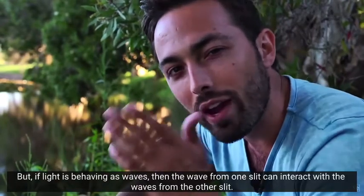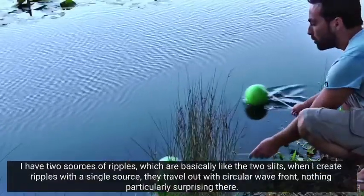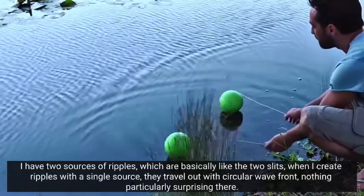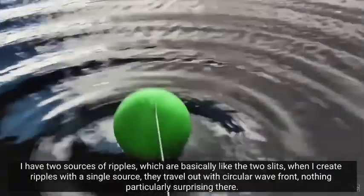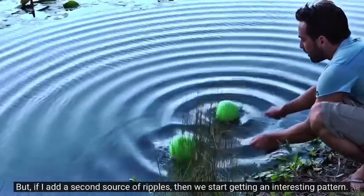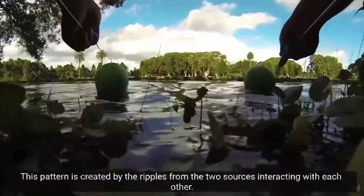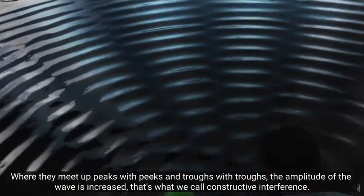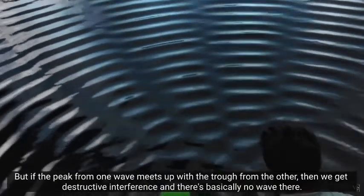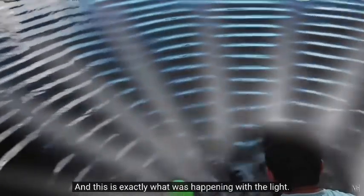But if light's behaving as waves, then the wave from one slit can interact with the waves from the other slit. I've got a demonstration here on a little pond where we can see this with water waves. I have two sources of ripples, which are basically like the two slits. When I create ripples with a single source, they travel out with circular wave fronts. Nothing particularly surprising there. But if I add a second source of ripples, then we start getting an interesting pattern. This pattern is created by the ripples from the two sources interacting with each other.